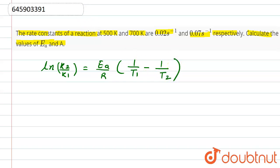We will be given the value of k2 and k1. This will be k2 and this one is k1. This is T2 and this one is T1. So ln of k2 is 0.07 and k1 is 0.02.